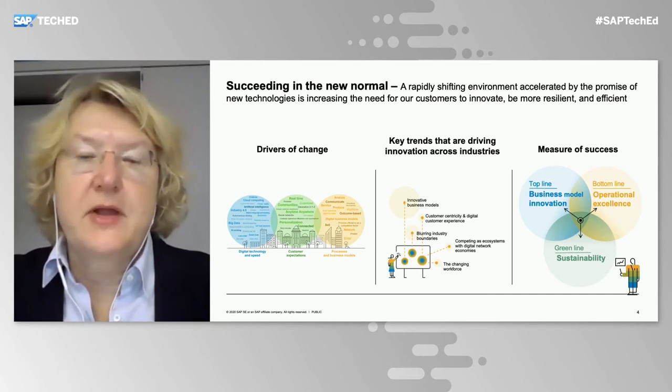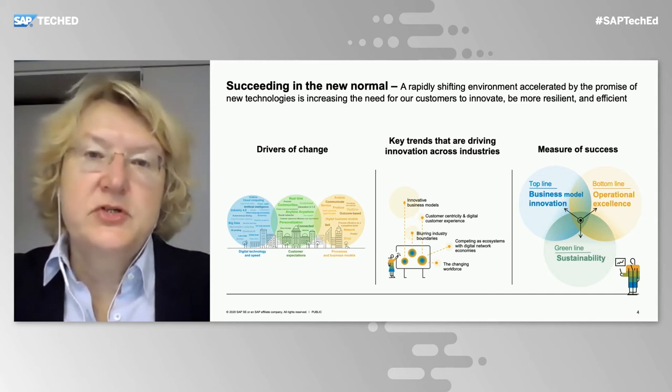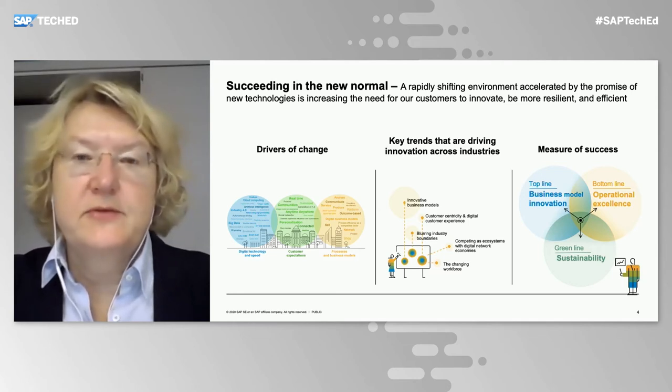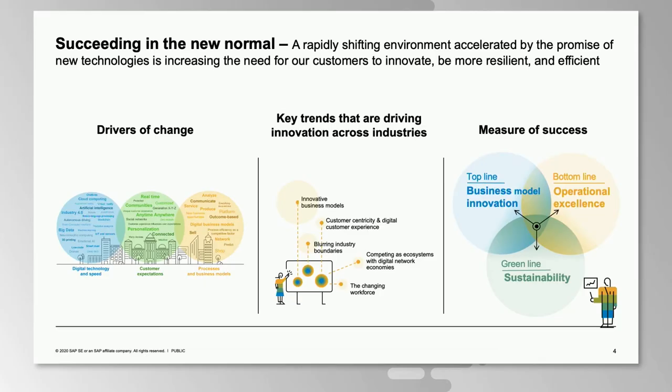And there is the changing workforce — enterprises today have five generations of people employed. Measures of success are also evolving. We consider the top line, very much influenced by business model innovation, and the bottom line with operational excellence. But to make enterprises successful in the future, there is a third dimension: the green line — sustainability aspects — which form a triangle of success for enterprises.